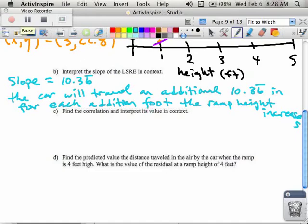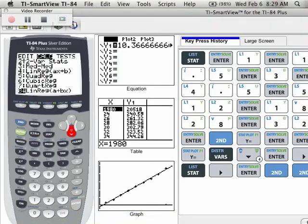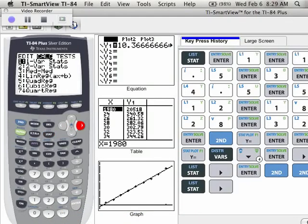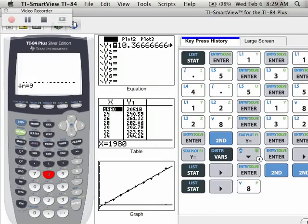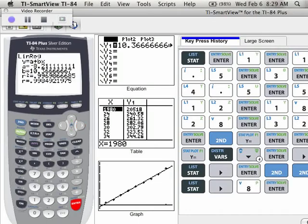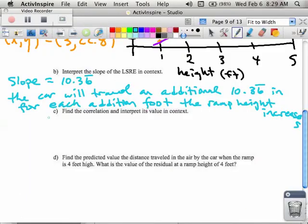In part c we actually did this already but we didn't write it down maybe when we calculated it. If I want to find the correlation I would go stat, calc, and for you guys in class I'm gonna go with number eight, enter. The other day we turned on our correlation stuff so I see 0.9985.